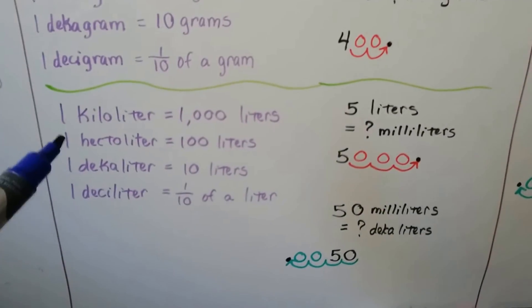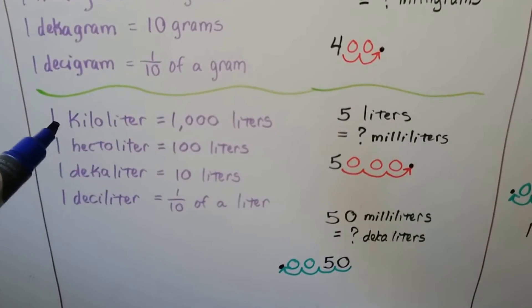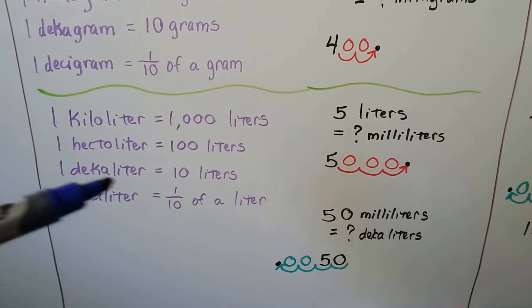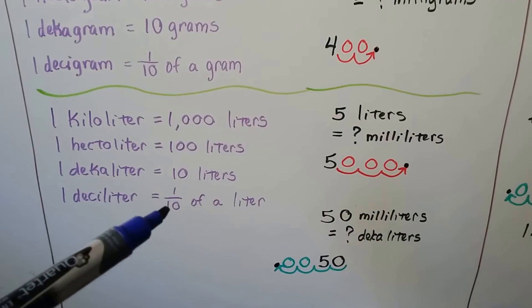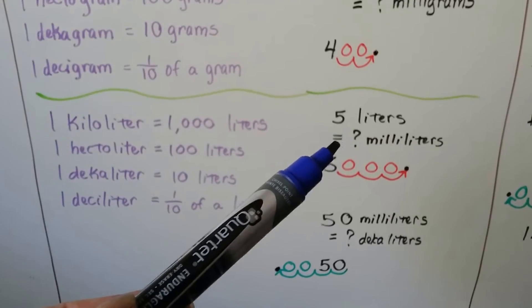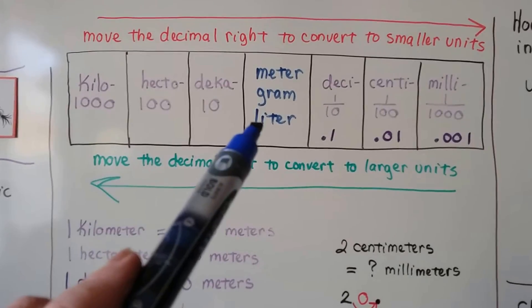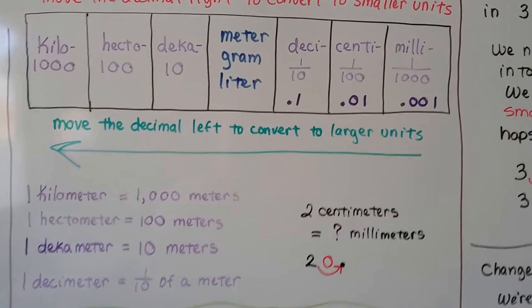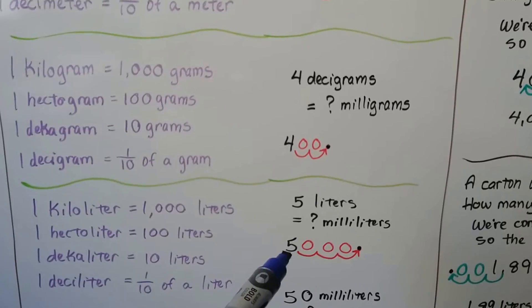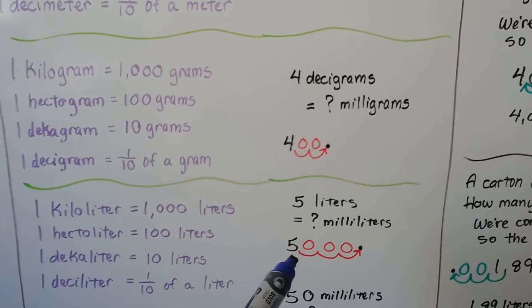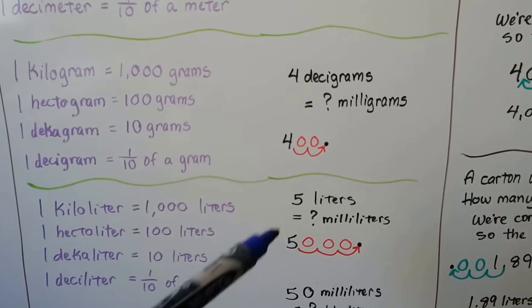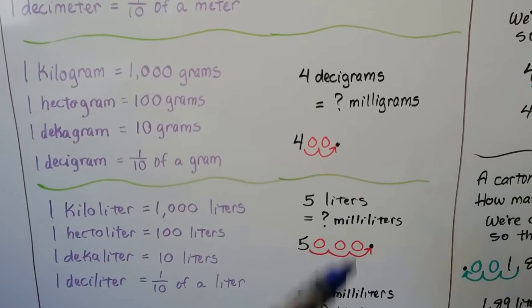Same thing with liters. One kiloliter is one thousand liters. One hectaliter is one hundred. One decaliter is ten. And one deciliter is one tenth of a liter. If we want to move from five liters to some amount of milliliters, here's liters. If we want to move to milliliters, we have to go one, two, three hops. And we're going to a smaller unit, so we're hopping to the left. And we were at five, and there's an invisible decimal point after the five. So we're going to go one, two, three, put a decimal point, and put in the zeros as placeholders. So five liters is equal to five thousand milliliters.